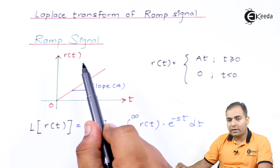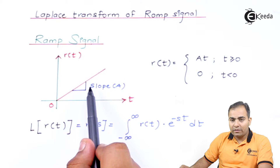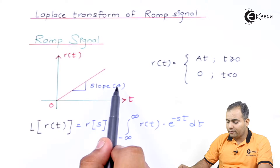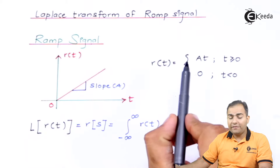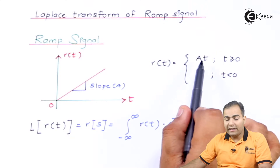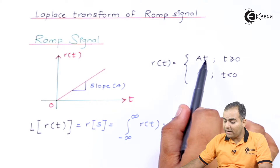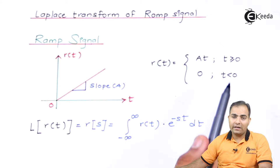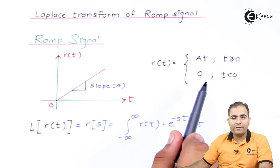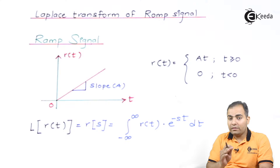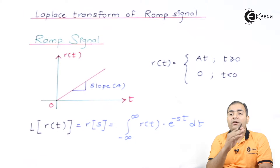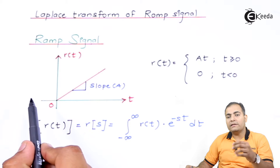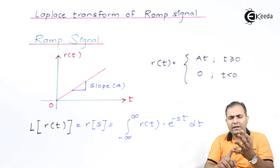The slope is defined by some constant — let's call it 'a'. The definition of the ramp wave is a·t, where 'a' is the slope and the signal varies with respect to time. This product a·t is available when t is greater than or equal to zero. When t is less than or equal to zero, the amplitude of the ramp wave is zero, because we have drawn a causal or right-handed signal.